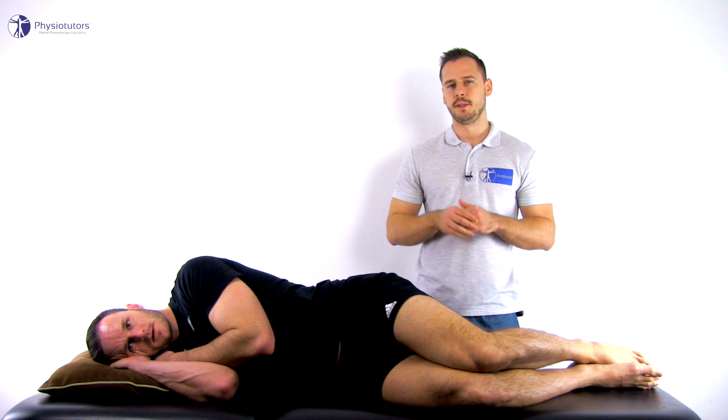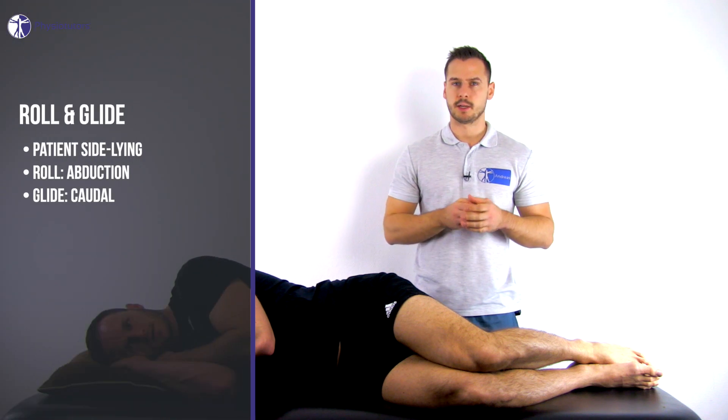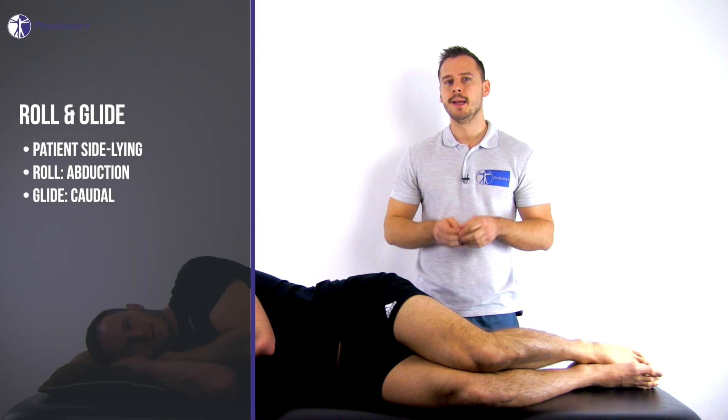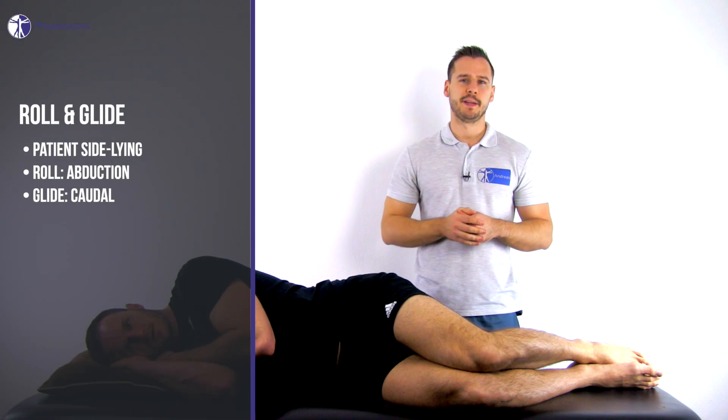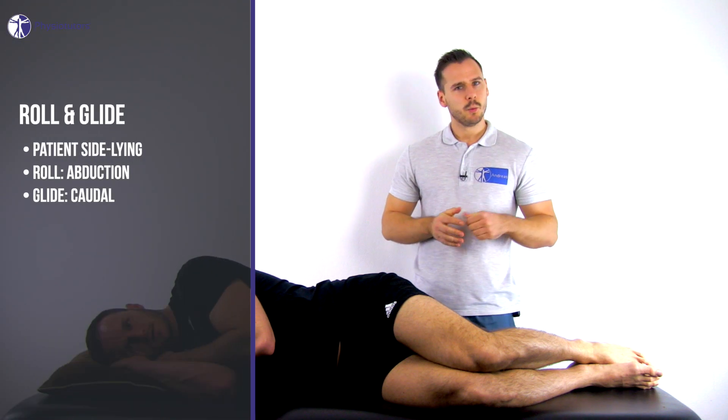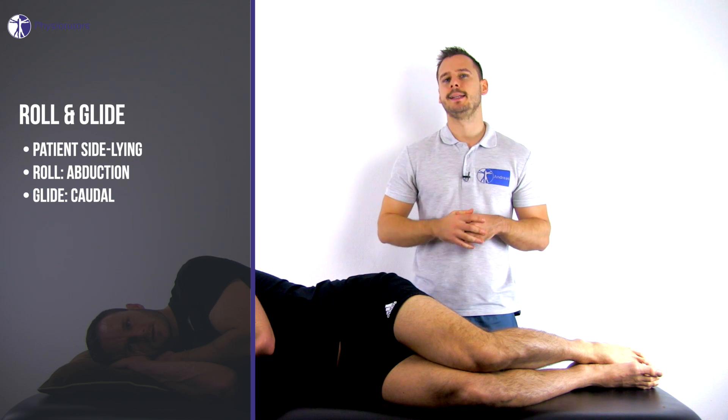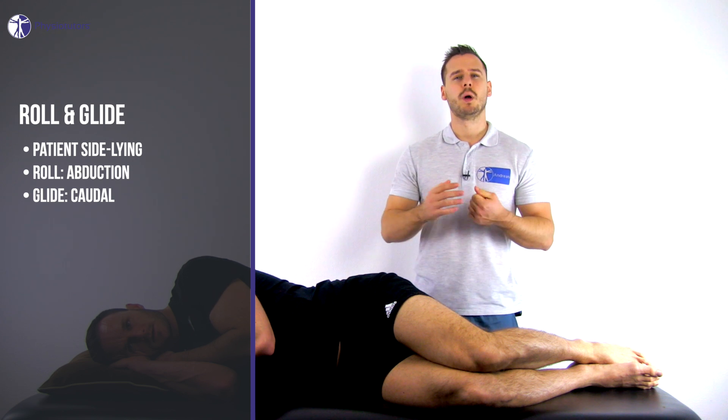The aim of roll-glide assessment is to gain information on reactivity of the joint and of course articular problems such as capsular limitations. For this assessment the patient can comfortably lie on the unaffected side with the hips and knees slightly bent while you stand behind them.